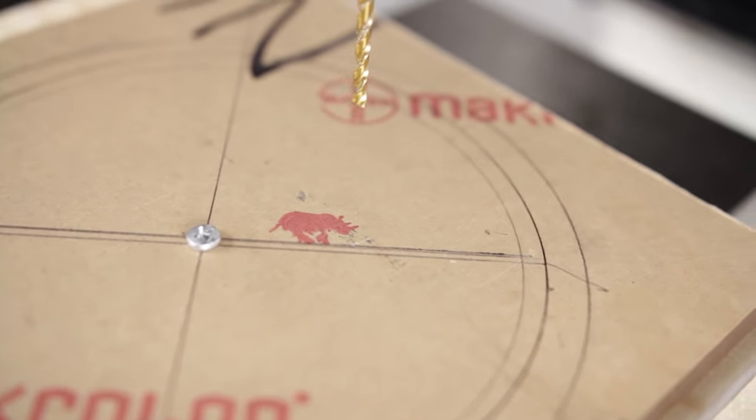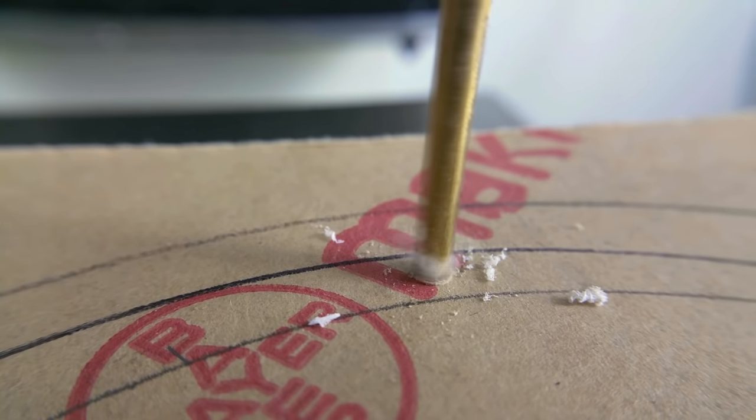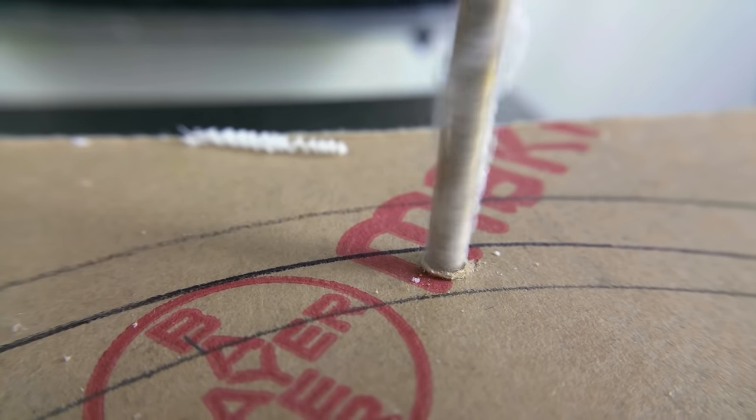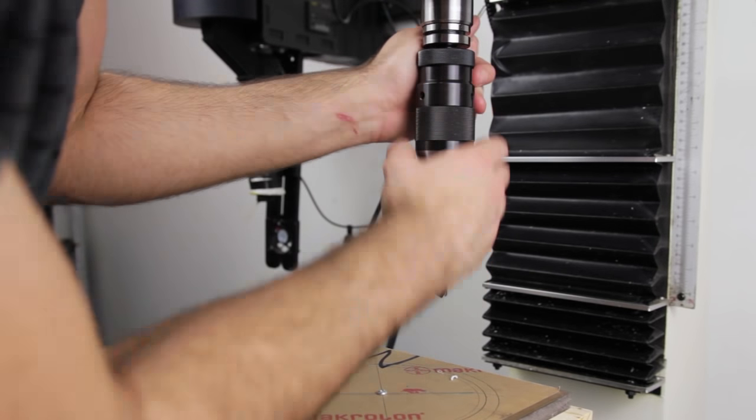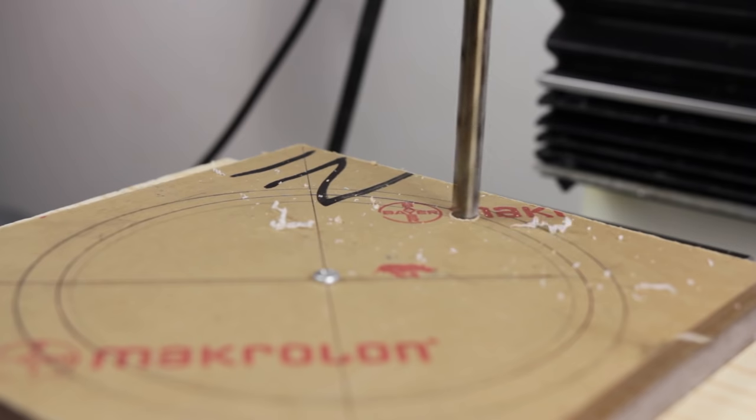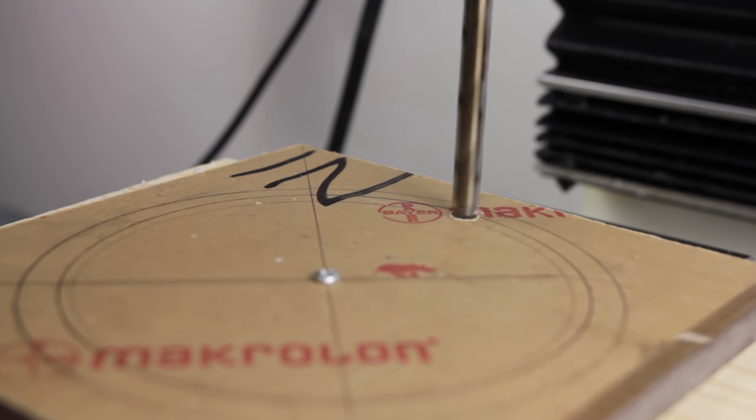I drill a pilot hole in the center of my outline I drew earlier and follow with a larger drill bit to complete the required bore size of the end mill. Please note that most end mills do not have the capability to center cut and do not like to be plunged straight down. This is why we drill this relief hole.